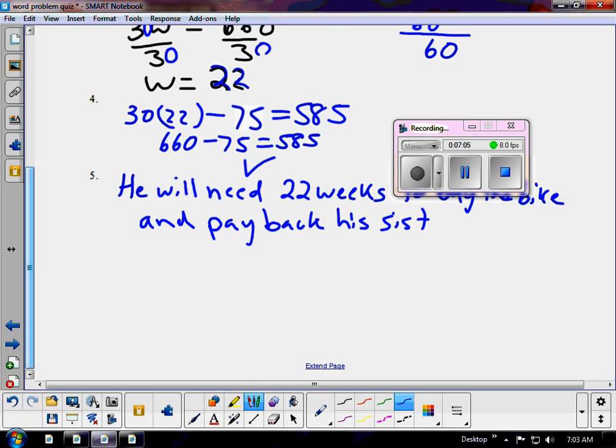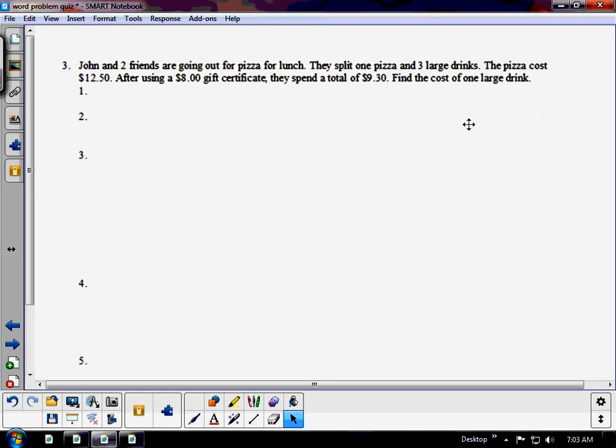Now you should be able to do these questions on your own without looking at the video. You can watch the video and then do the questions on your own without looking. That's a good way to study. The next question: John and two friends are going out for pizza. For lunch, they split one pizza and three large drinks. The pizza costs $12.50. After using an $8 gift certificate, they spend $9.30. Find the cost of one large drink.